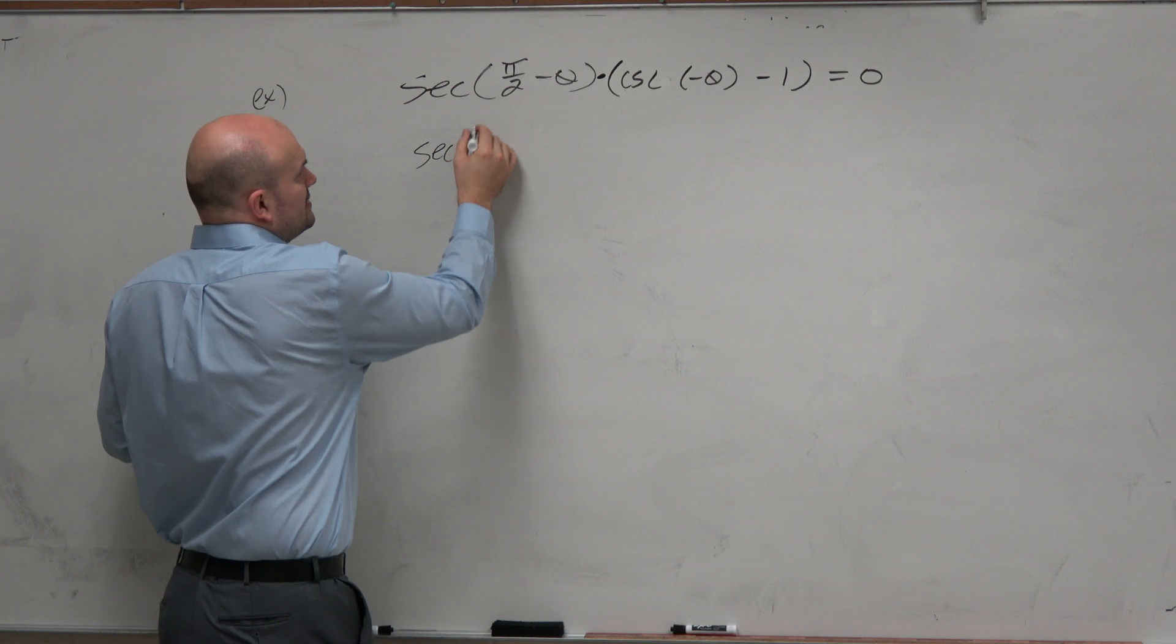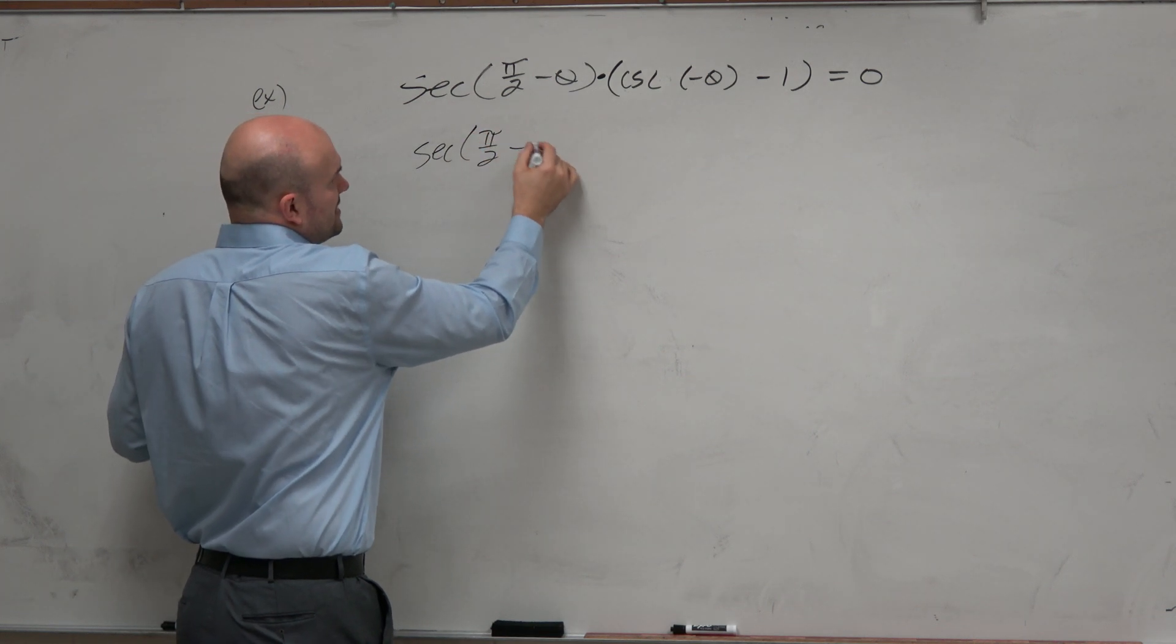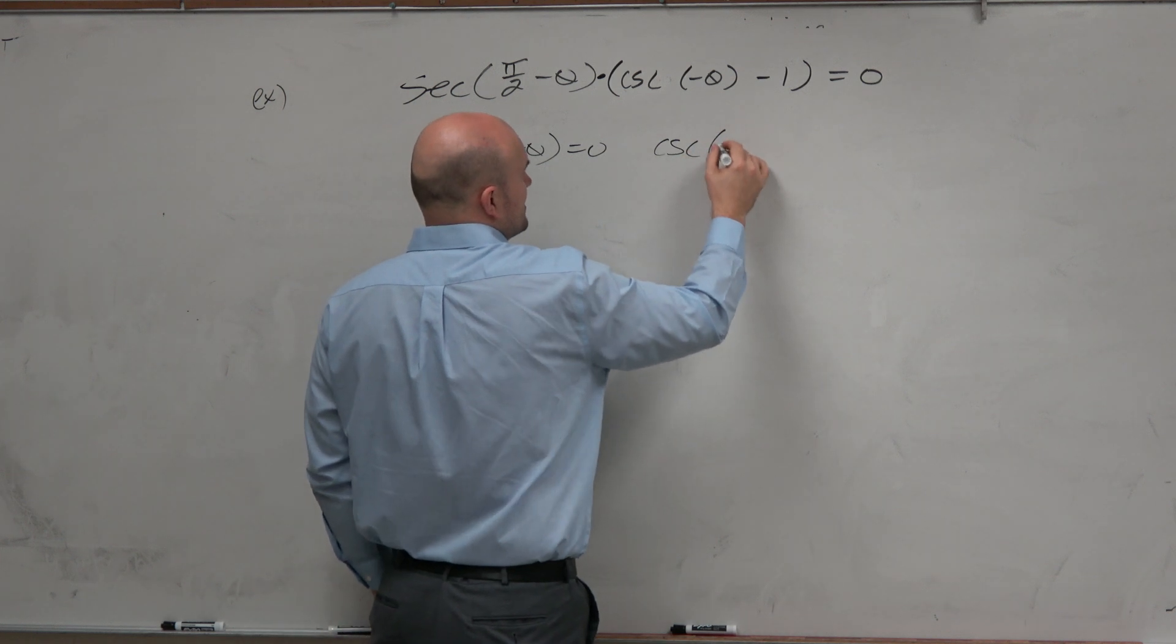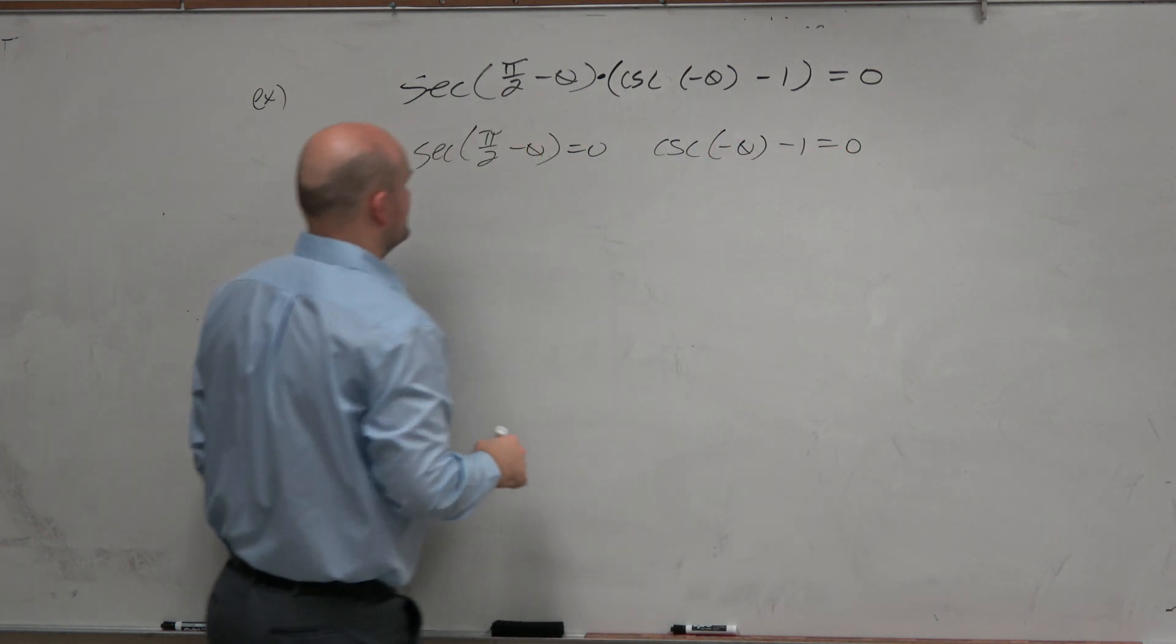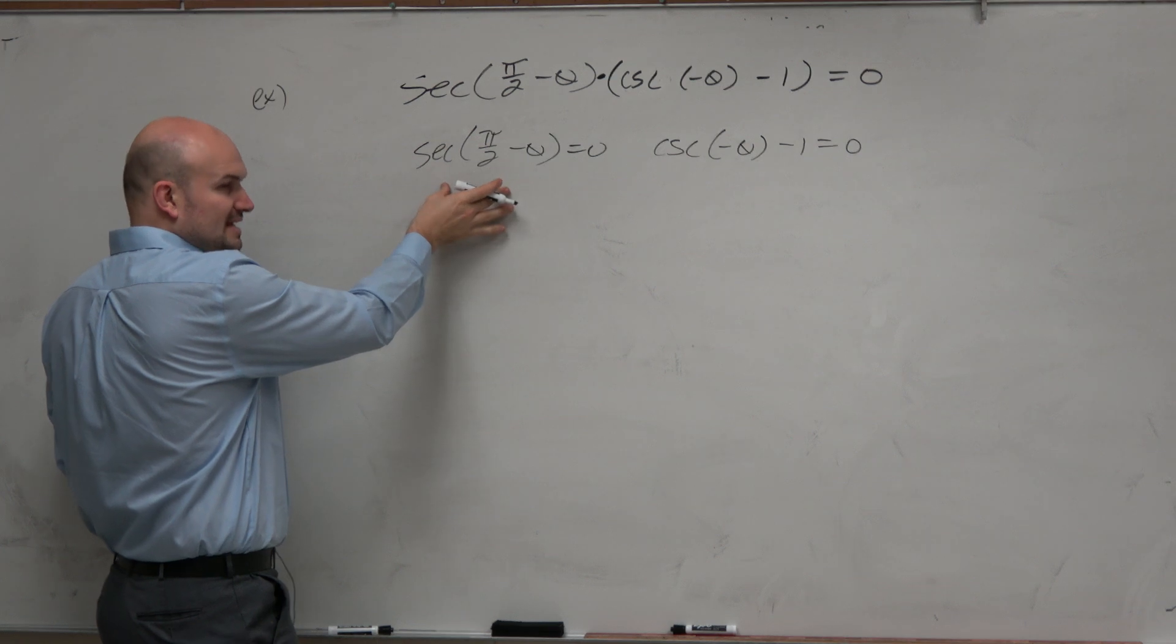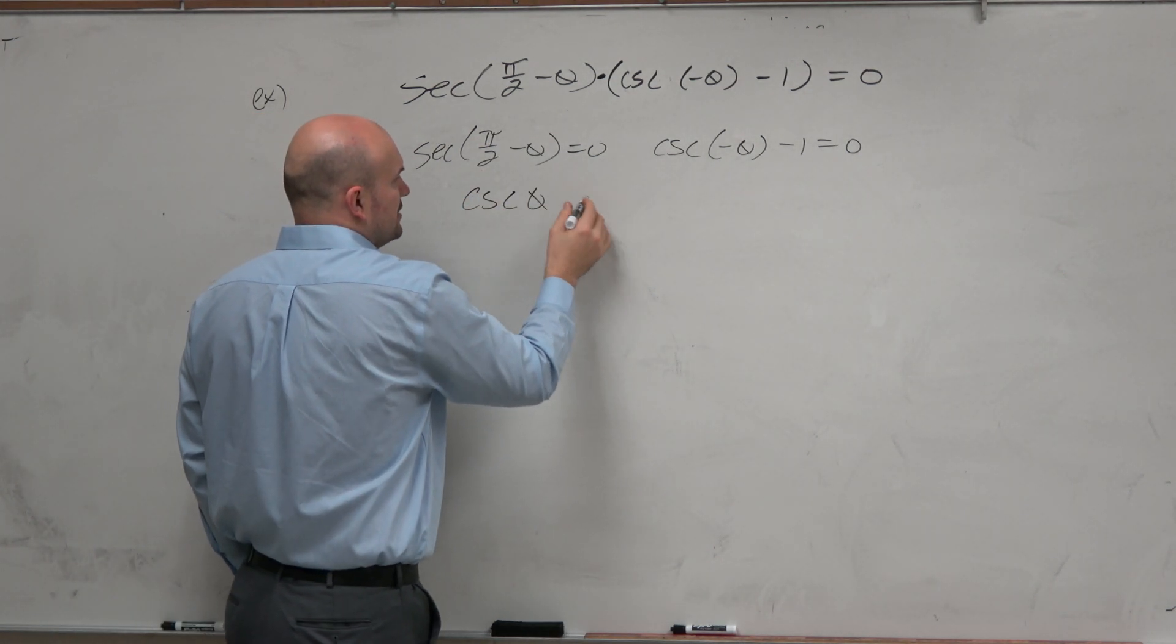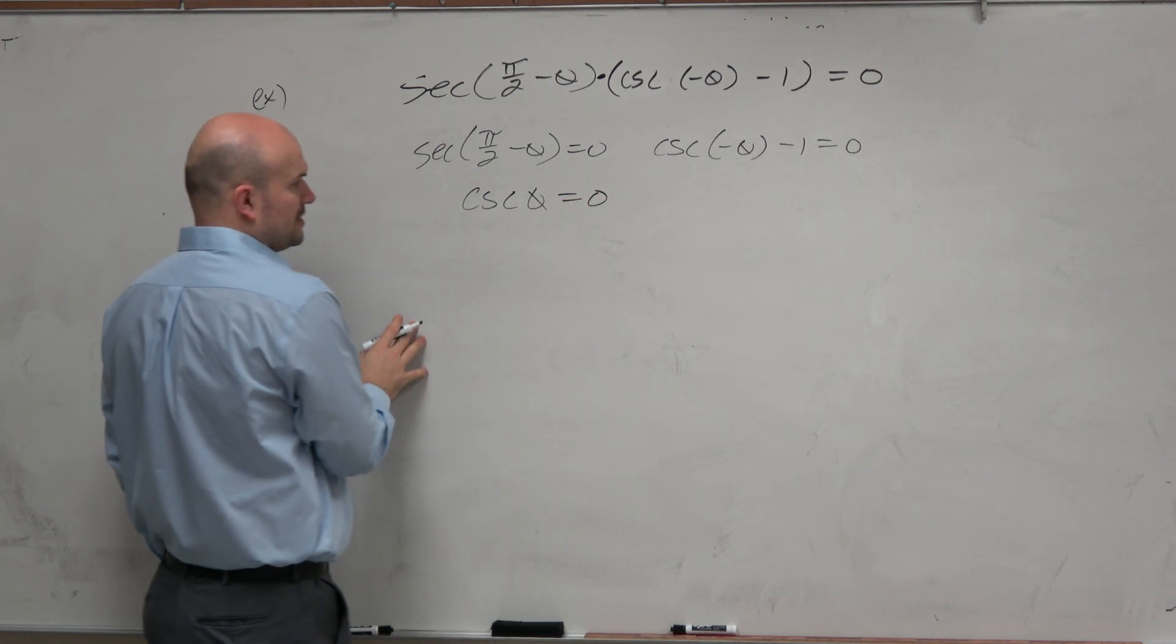So we'd have secant of pi halves minus theta equal to 0, and cosecant of negative theta minus 1 equals 0. And again, what I was talking about, secant applied transformation is the same thing as cosecant of theta equals 0.